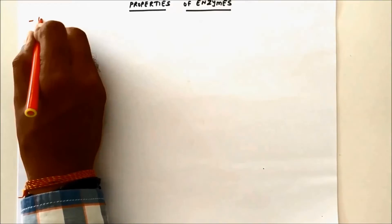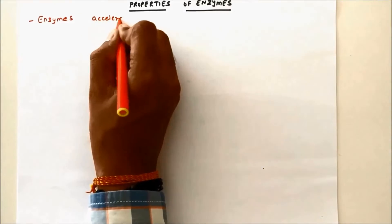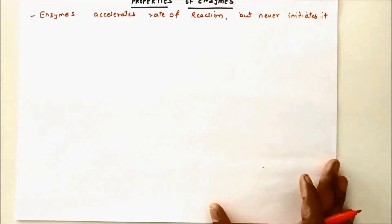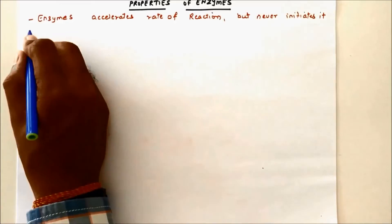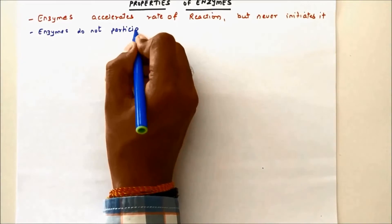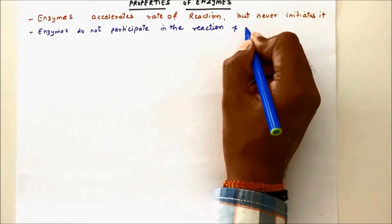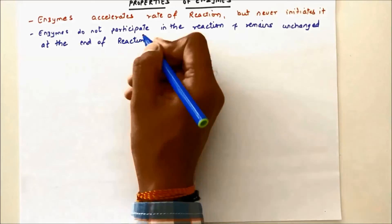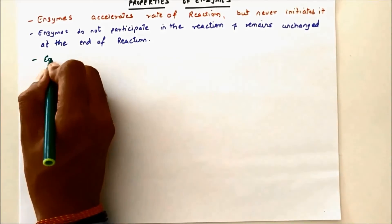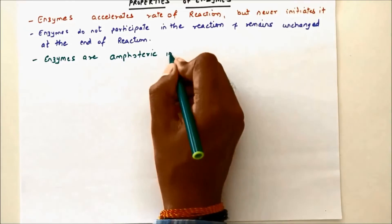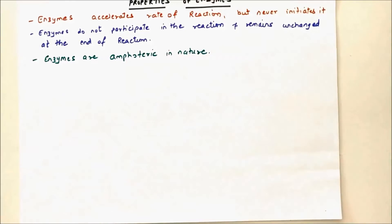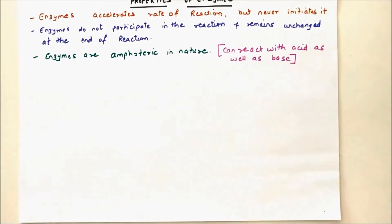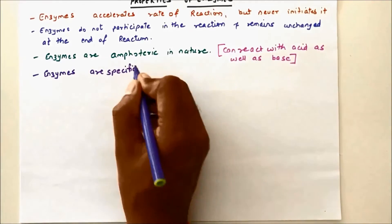When we talk about properties of enzymes, enzymes accelerate the rate of reaction but never initiate the reaction. Enzymes do not participate in the reaction, so they remain unchanged — before and after the reaction, the enzyme is the same. Enzymes are amphoteric in nature, meaning they can react with both acids and bases.